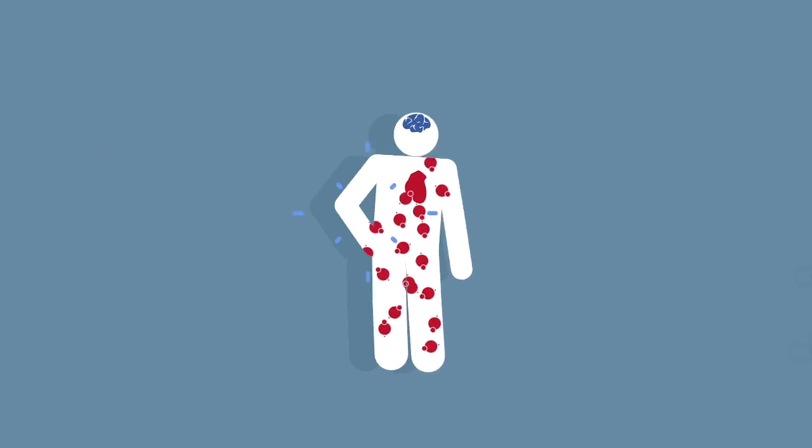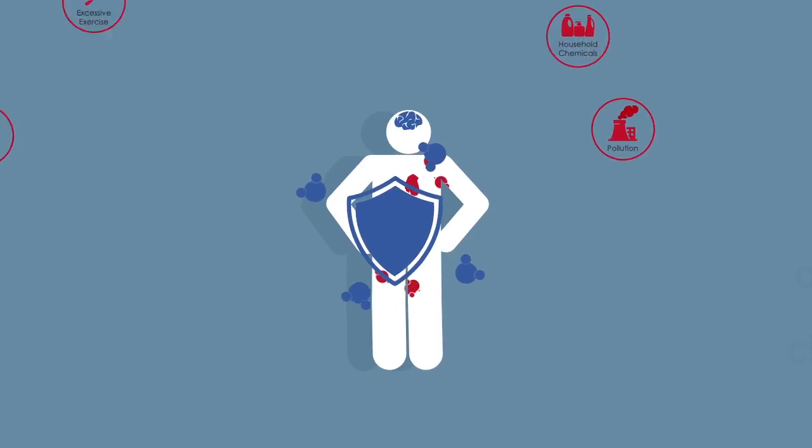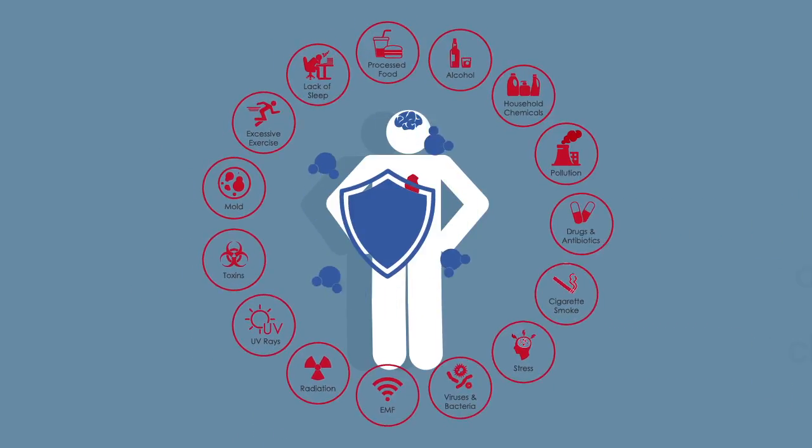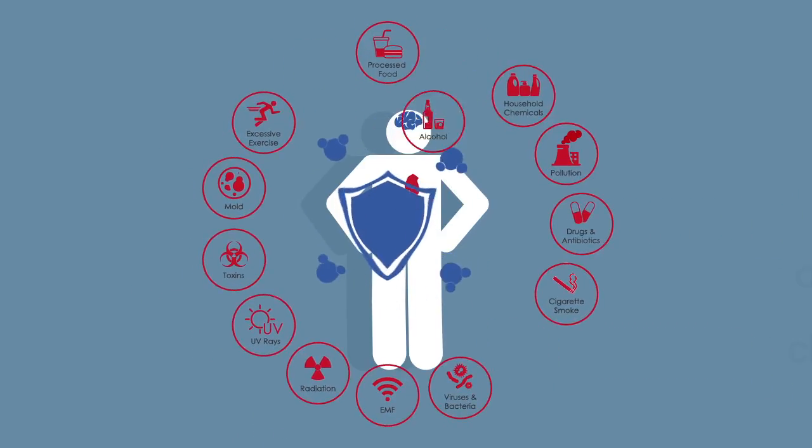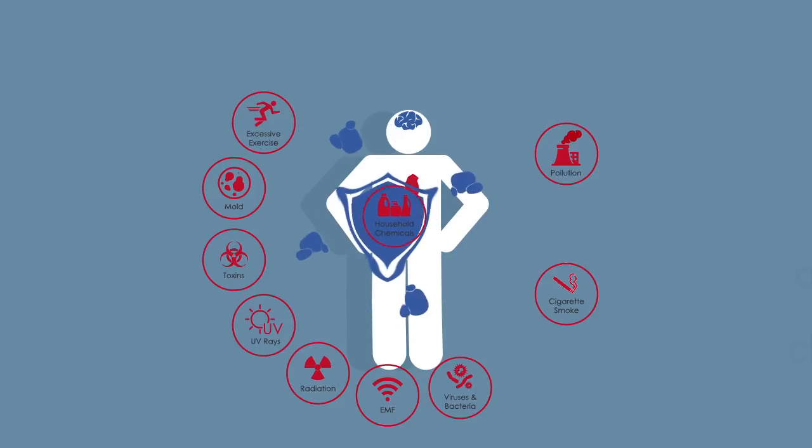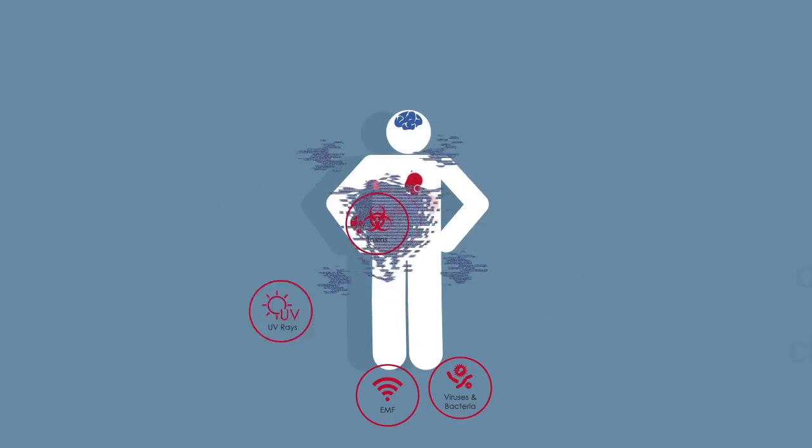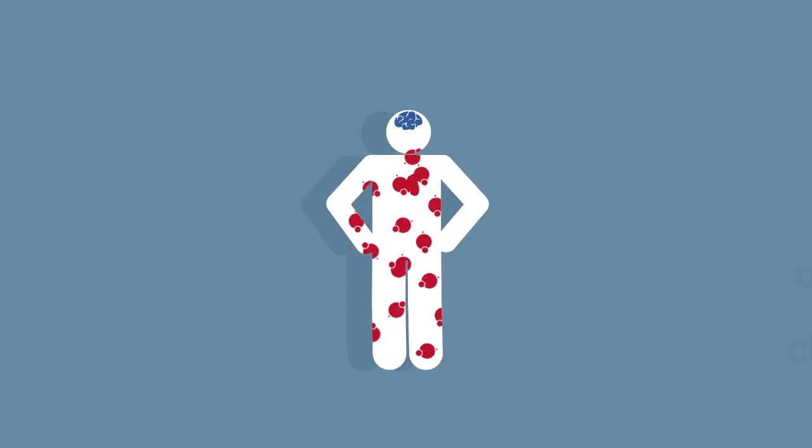Normally your cells have antioxidant defense systems that protect you from free radicals, but as you age, become stressed, have lack of sleep, drink alcohol, take drugs, eat processed food, are exposed to chemicals or pollution, your antioxidant defense system gets weaker and more free radicals pop up inside your cells.